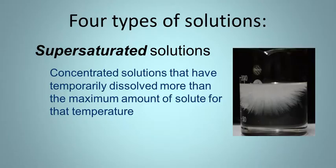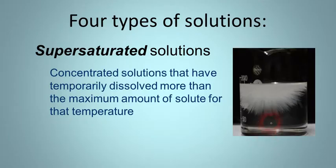That's usually temporary because at some point it will crystallize out, and when it crystallizes, it usually happens very quickly. Fudge is an example of a supersaturated solution. Sodium acetate is another example, where we can actually make something called a chemical heat pack. So that's the supersaturated solution.